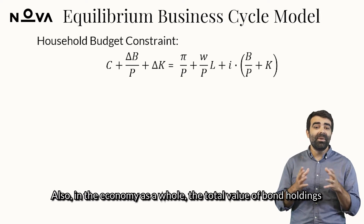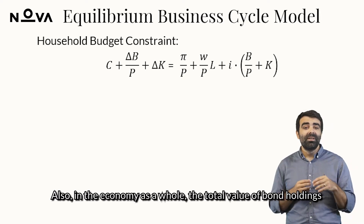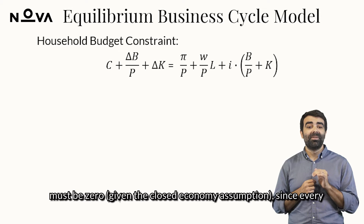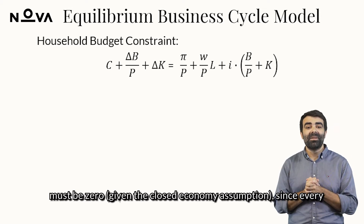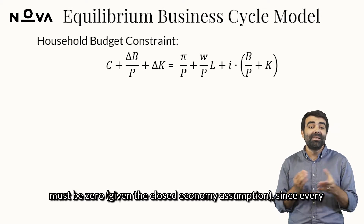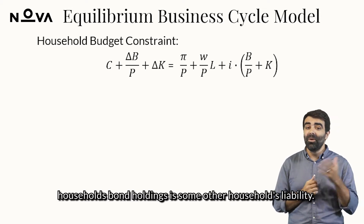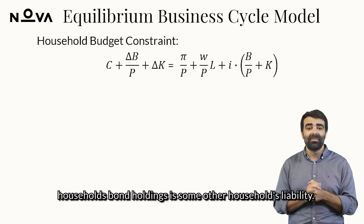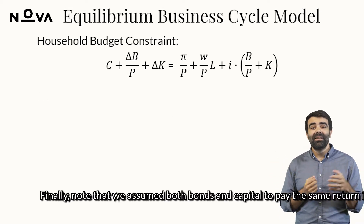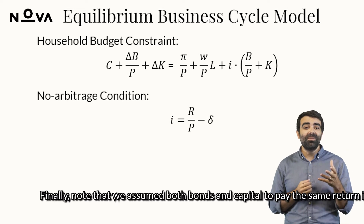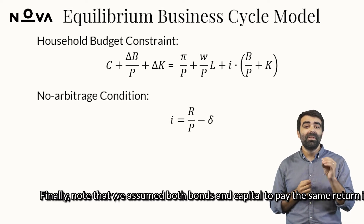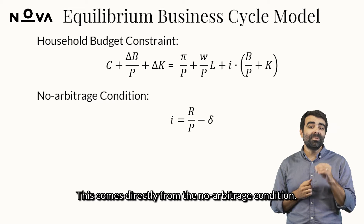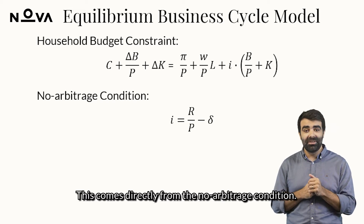Also, in the economy as a whole, the total value of bond holdings must be zero, given the closed economy assumption, since every household's bond holdings is some other household's liability. Finally, note that we assumed both bonds and capital to pay the same return. This comes directly from the no-arbitrage condition.